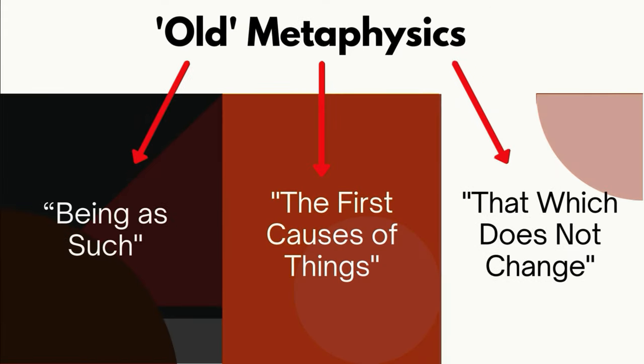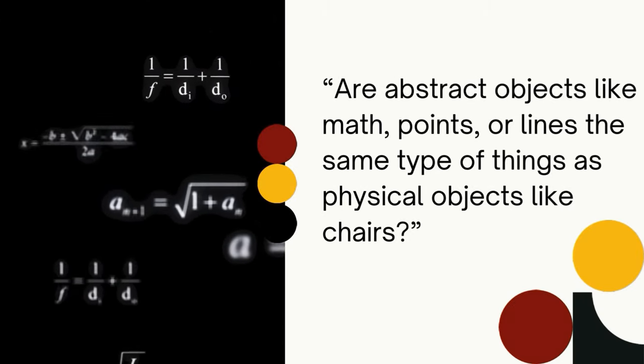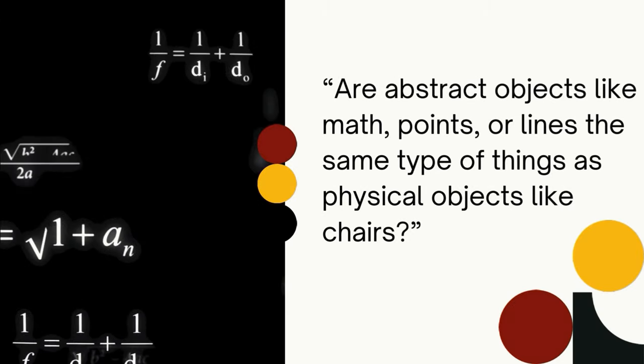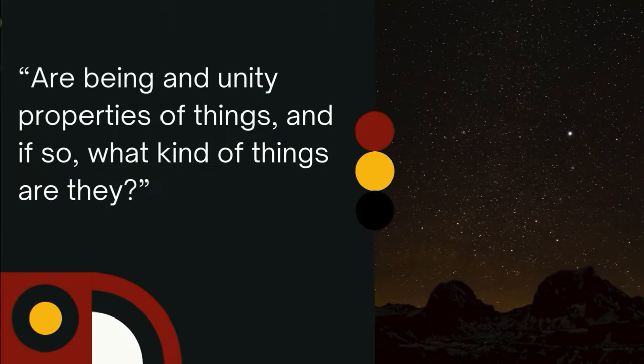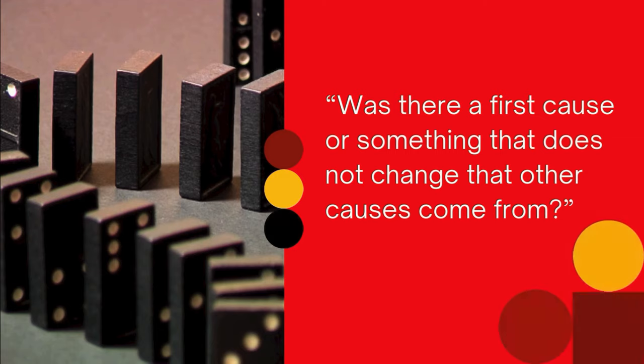Old metaphysics could be thought of as a science that dealt primarily with eternal things. Specifically, Aristotle's metaphysics dealt with the subjects: being as such, the first causes of things, and that which does not change. Some questions Aristotle and the old metaphysicians wrote about include, are abstract objects like math points and lines the same type of things as physical objects like chairs? Are being and unity properties of things, and if so, what kind of things are they? Was there a first cause or something that does not change that other causes come from?